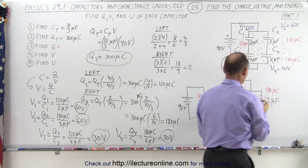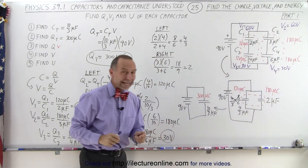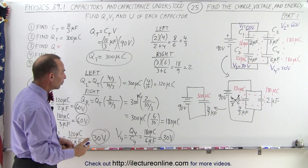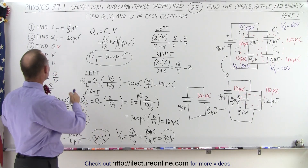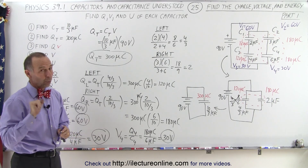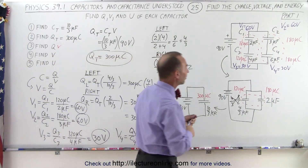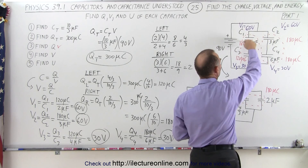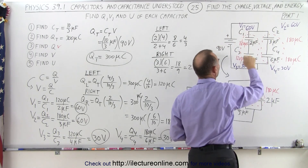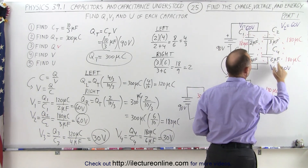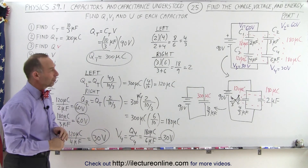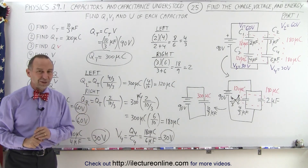So now we have the voltage across each capacitor and the charge on each capacitor. Since we're out of board space, we'll do one more video to show how to find the energy on each of the four capacitors. One quick check to make sure we did this correctly: the voltage across each branch should equal the voltage of the supply. 60 plus 30 on the left side is 90, and 60 plus 30 on the right side is 90 — so that looks correct.